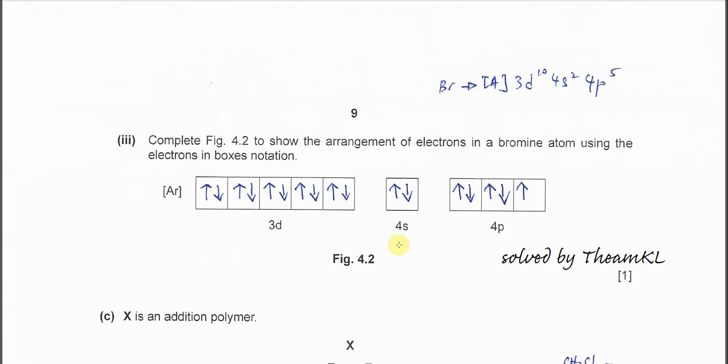Part three: Complete figure 4.2 for the bromine atom electron arrangement. You need to know the electron configuration for bromine: it's argon, 3d10, 4s2, 4p5. You must at least know this. You can check the periodic table that is given.